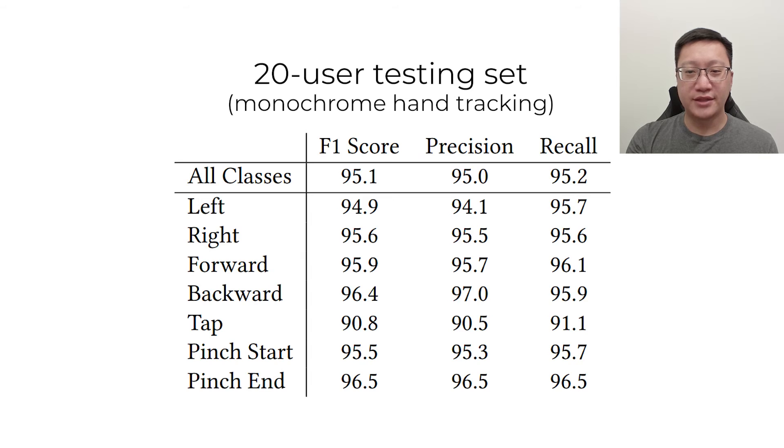We had a holdout test set of 20 users. Our model achieved an F1 score of 95.1% across the seven gestures from the monochrome hand tracking. The F1 score per gesture was fairly consistent, roughly 95%, except for tap, which had a lower 90.8% F1 score.